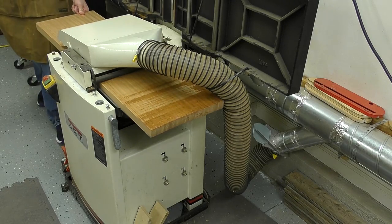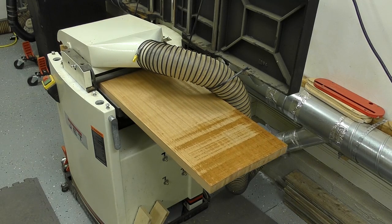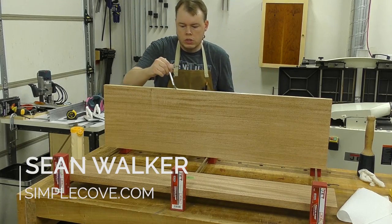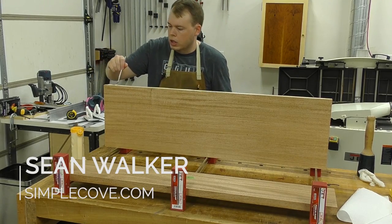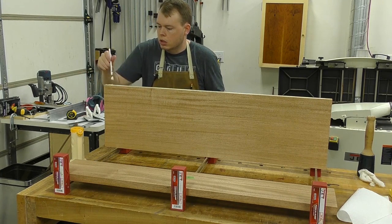I then took the boards over to the table saw to give me nice parallel edges. After getting the boards cut to size, I glue up the panels for the front, sides, and back of the blanket chest.